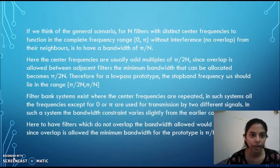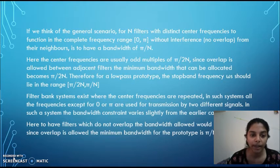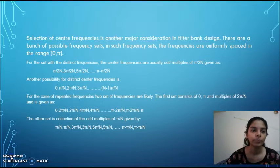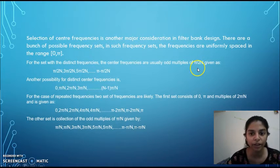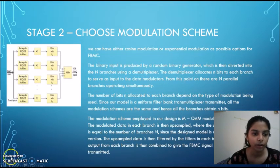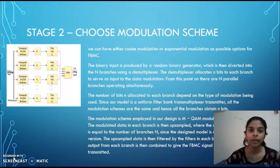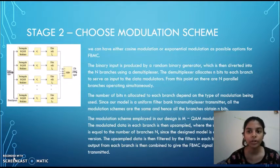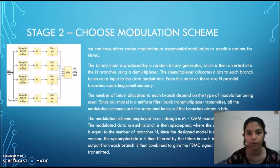In FBMC systems, suppose the bandwidth is π/N; then the center frequencies are usually odd multiples of π/2N. Filter bank systems use center frequencies which are repeated. There can be multiples of π/2N, multiples of 2π/N, multiples of π/N, and so on. Next, we choose the modulation scheme — it can either be cosine modulation or exponential modulation. Binary input is diverted into N branches using a de-multiplexer. The number of bits allocated to each branch depends on the type of modulation being used.